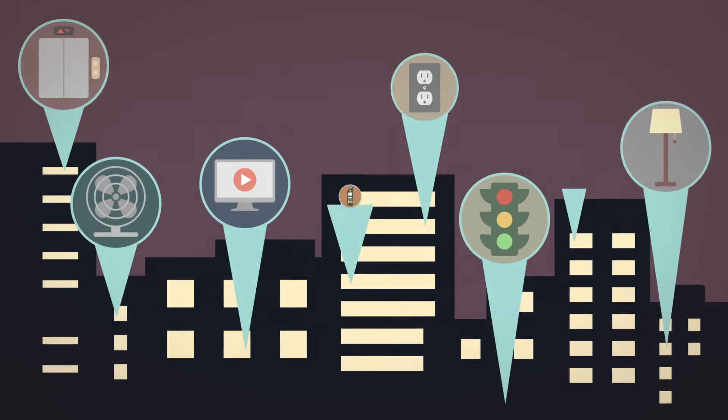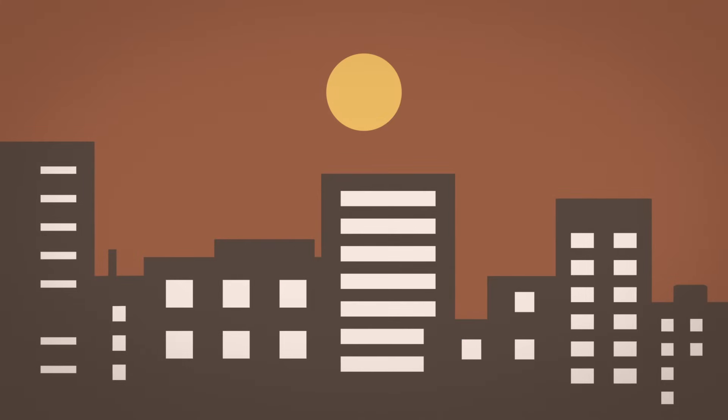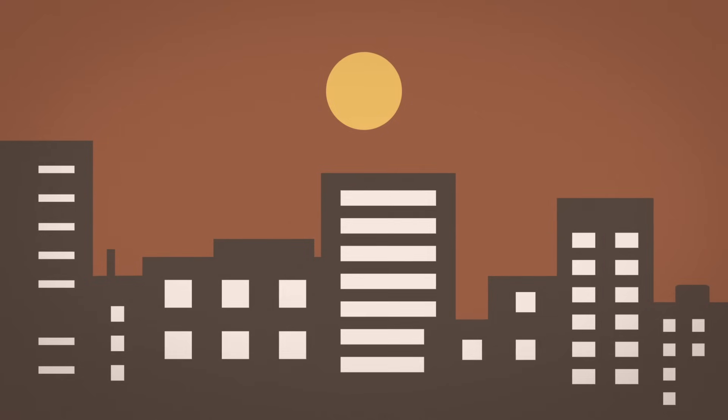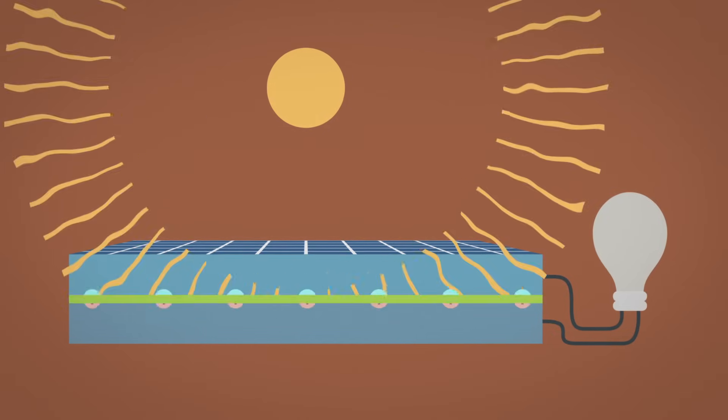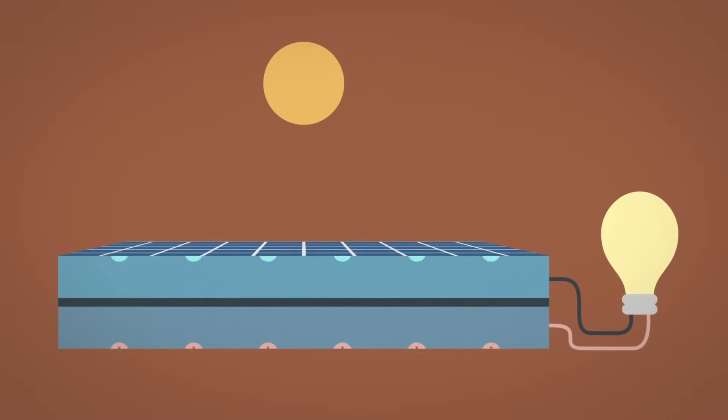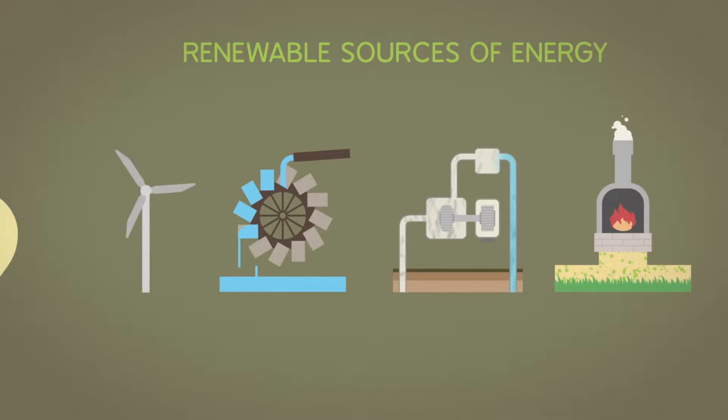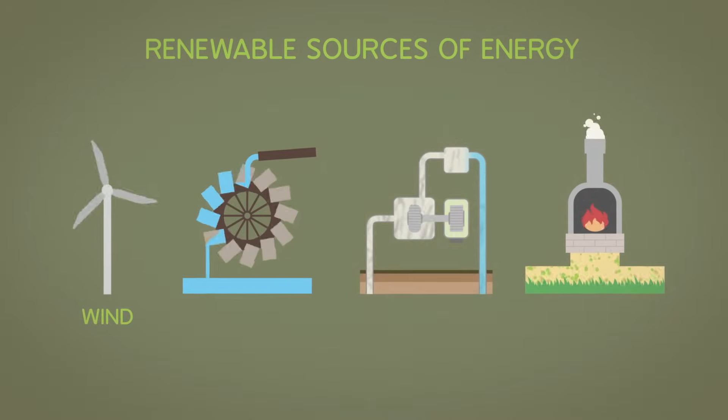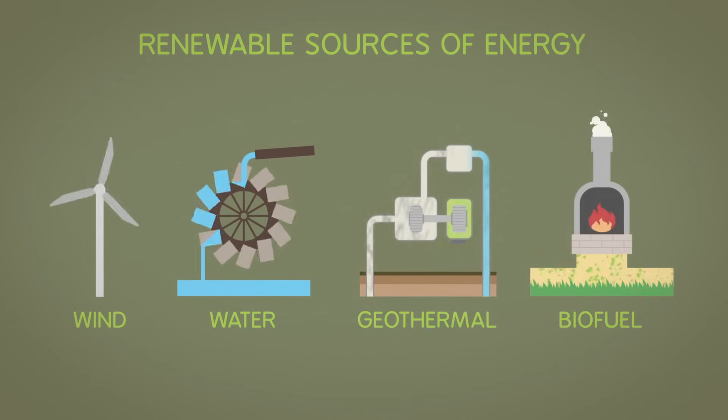Fortunately, we aren't limited to burning non-renewable fossil fuels to generate electricity. Electrons can also be induced to flow by direct interaction with light particles, which is how a solar cell operates. Other renewable energy sources, such as wind, water, geothermal, and biofuels, can also be used to generate electricity.